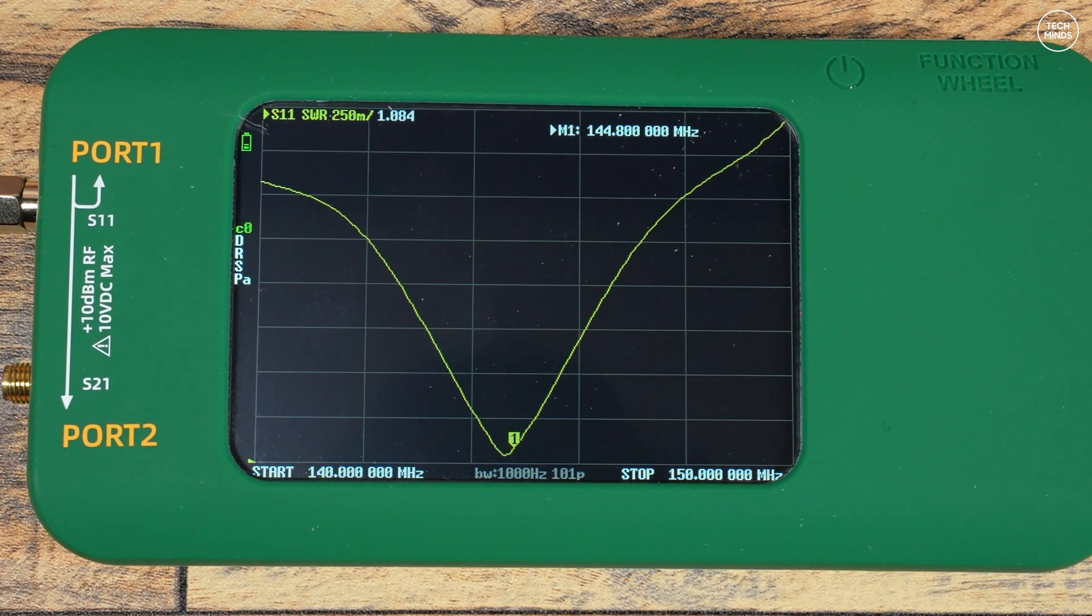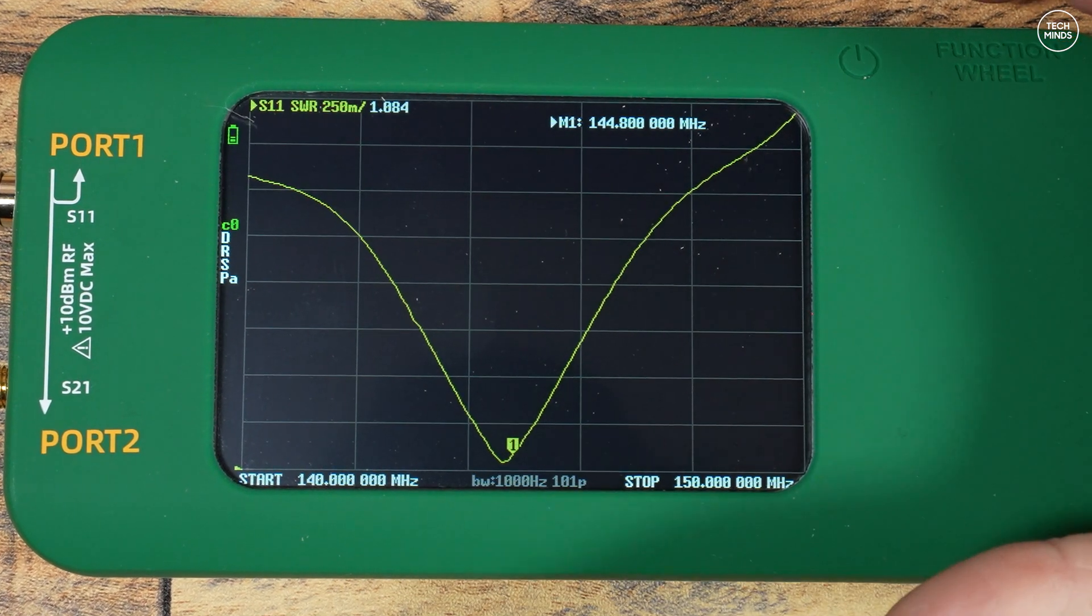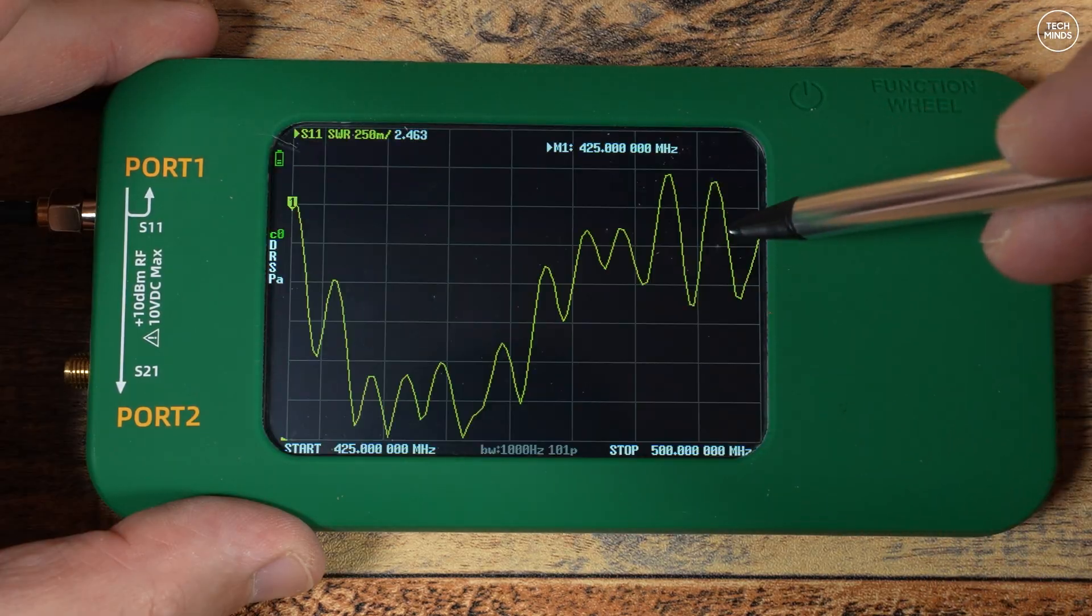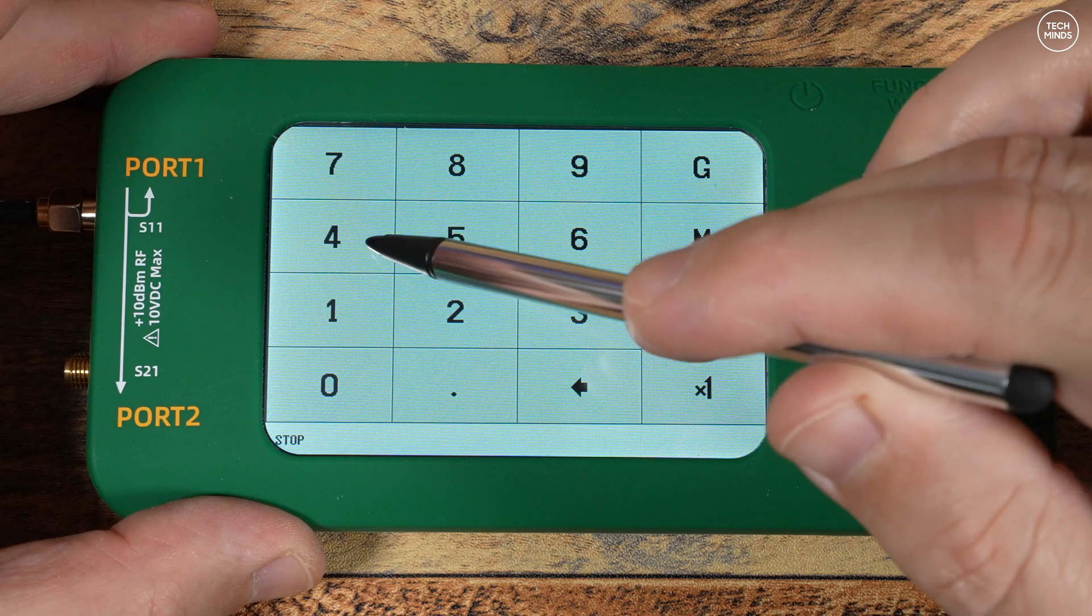Now let's test the 70 centimeter band up between 430 and 440 megahertz. Again, SWR of 1.5 or less across the whole band.